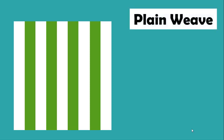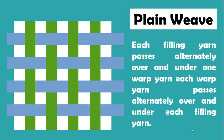Plain weave is the oldest, easiest, and most simple form of weaving. It repeats and is the most often used woven structure. It repeats on the minimum of two ends and two picks. Each filling yarn passes alternately over and under one warp yarn. Each warp yarn passes alternately over and under each filling yarn.